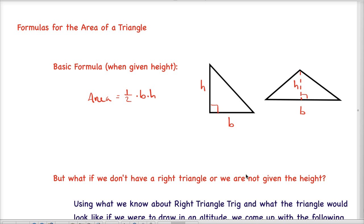We'll start with our basic formula that we all know and probably remember from geometry class, which is that the area of a triangle equals one-half times the base times the height. This works when we have a right triangle or when we have an oblique triangle with the height or an altitude drawn in.